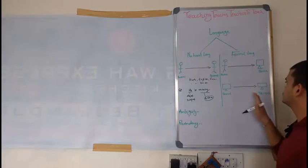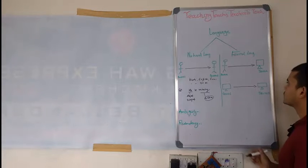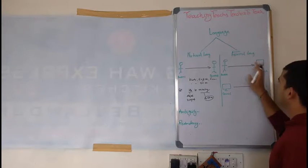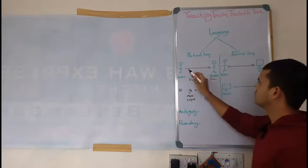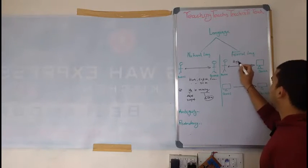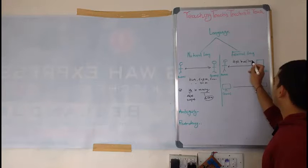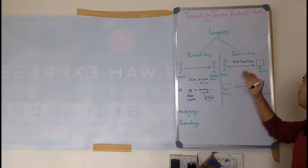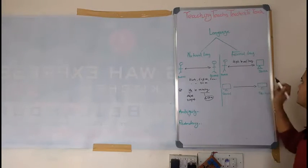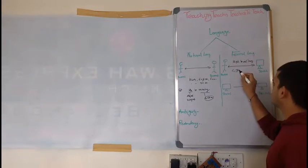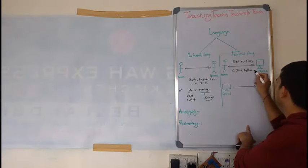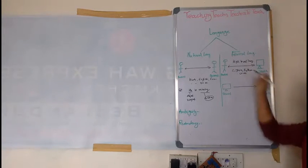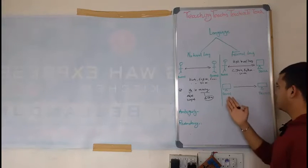So first scenario is person is talking with device or device is talking with person. That is high-level language. High-level language means person can understand this language easily or device also can understand it. Let's see: Java, Python, and so on. These languages are coming inside high-level language.